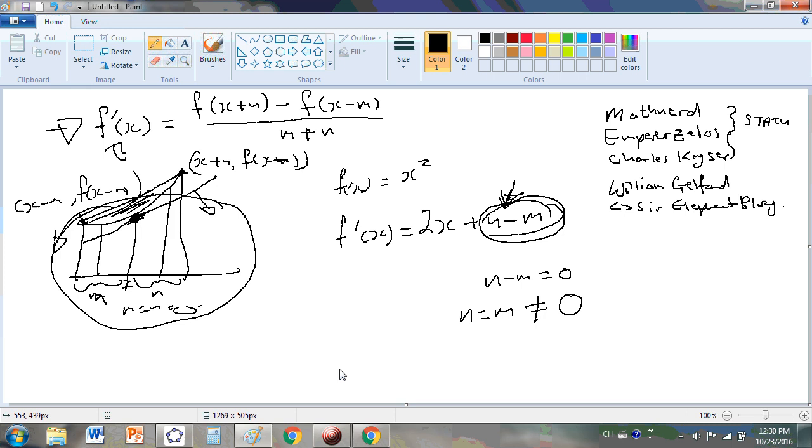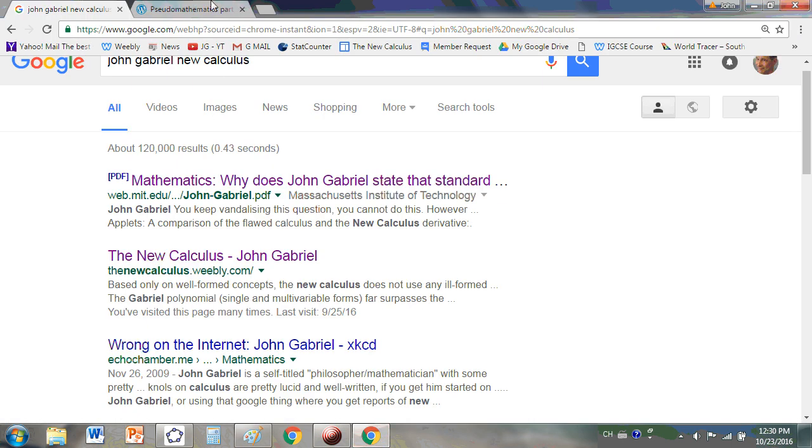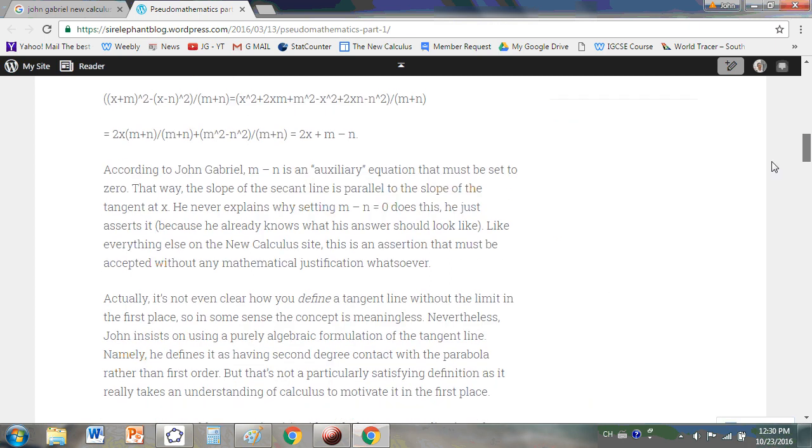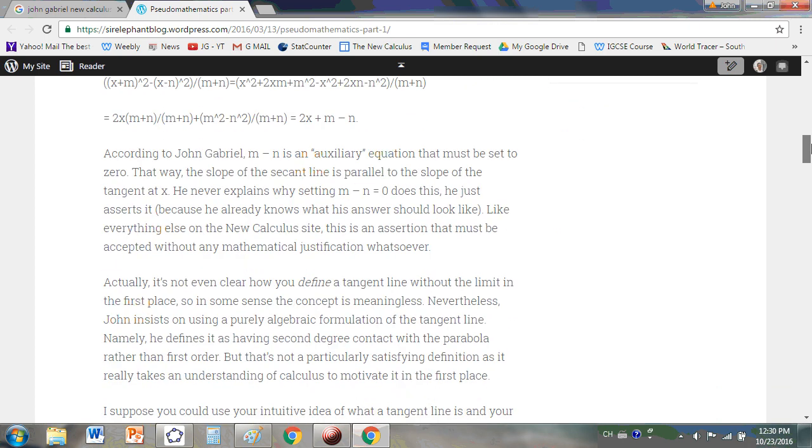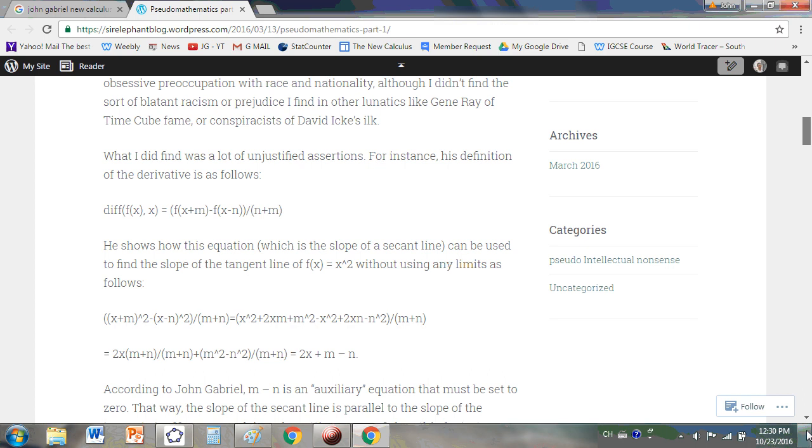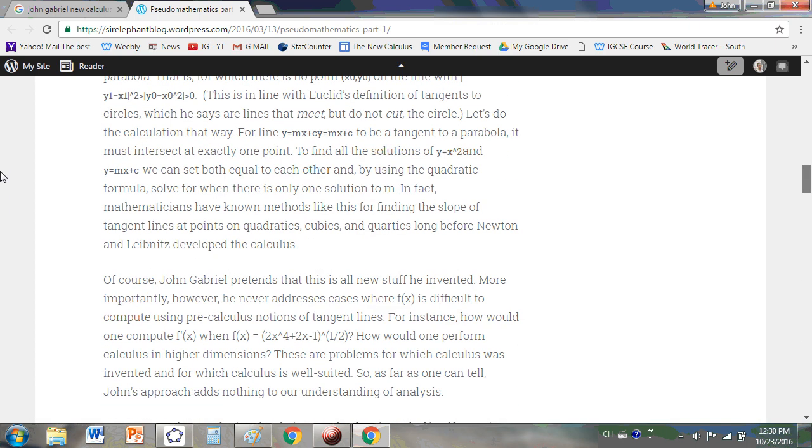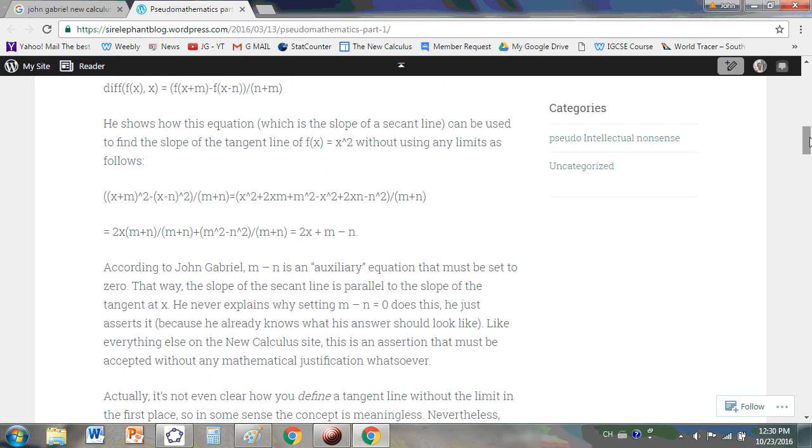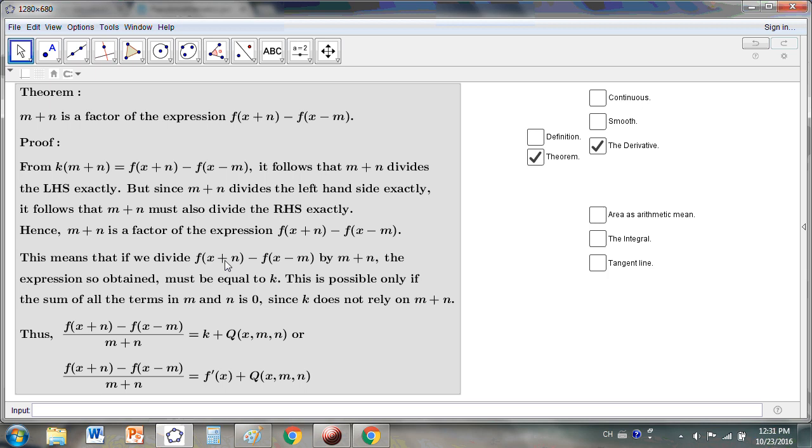So another idiot is William Gelfand who's created this blog here. So he says here, according to John Gabriel, m minus n is an auxiliary equation that must be set to 0. That way the slope of the secant line is parallel. He says he never explains why setting that equal to 0 does this. But of course I do. I prove it here.